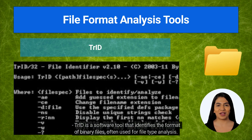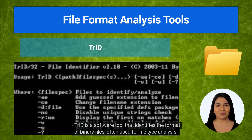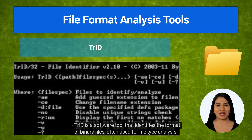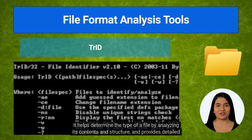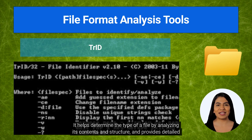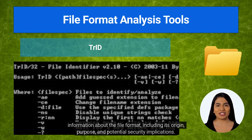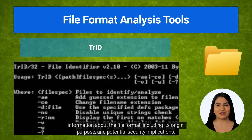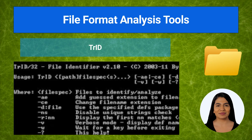TrID is a software tool that identifies the format of binary files, often used for file type analysis. It helps determine the type of a file by analyzing its contents and structure, and provides detailed information about the file format, including its origin, purpose, and potential security implications.